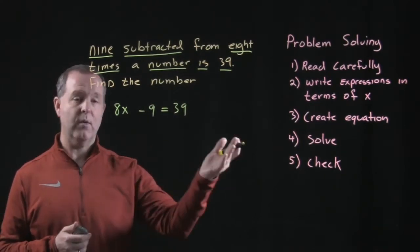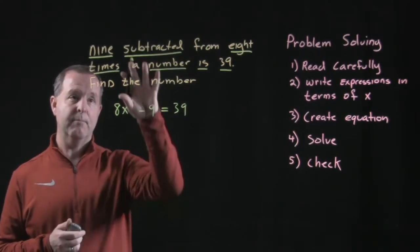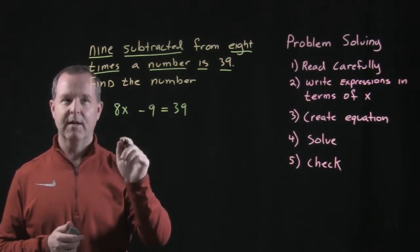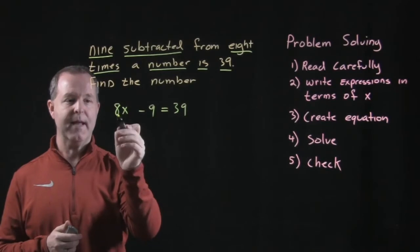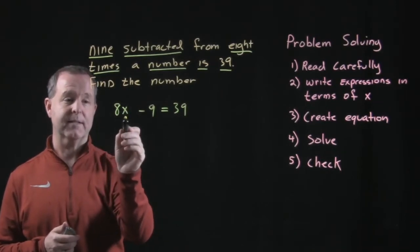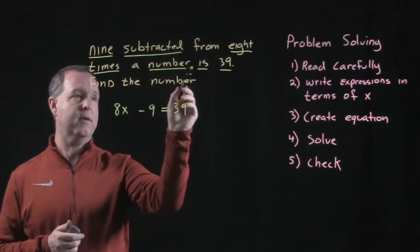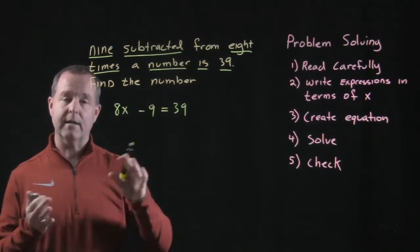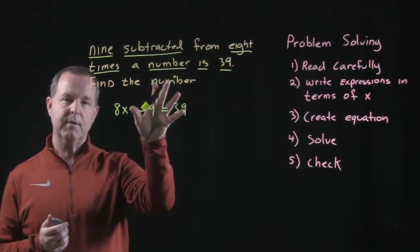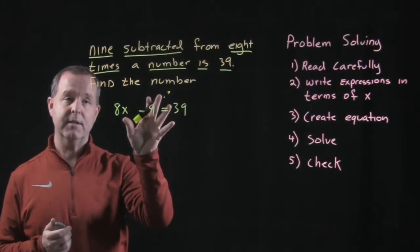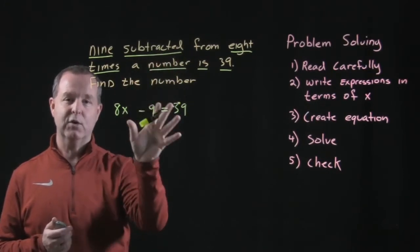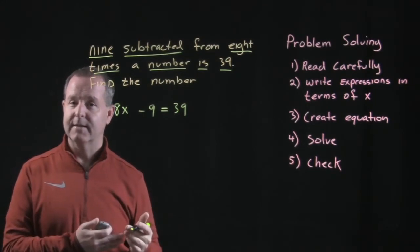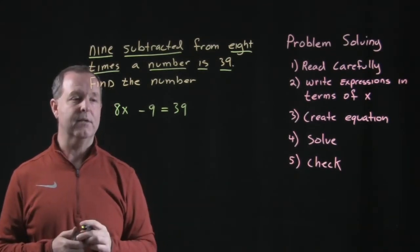So now we have an equation. We created an equation based on this word statement. Again, this is why we use algebra. We were able to write the same thing in a very brief algebraic statement that took us 12 words to write in a lot of space. That's what algebra and mathematical thinking allows us to do is to translate to a clear, concise statement so we have a better process to make or to find a solution.